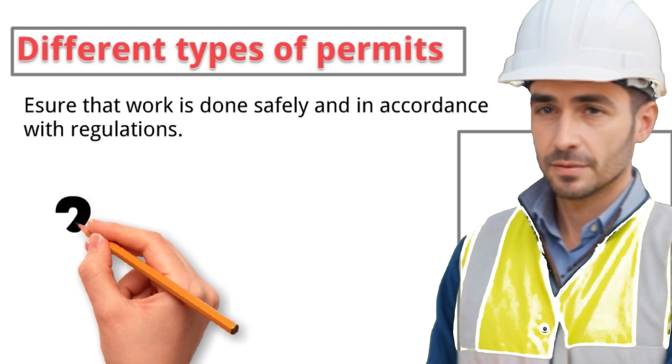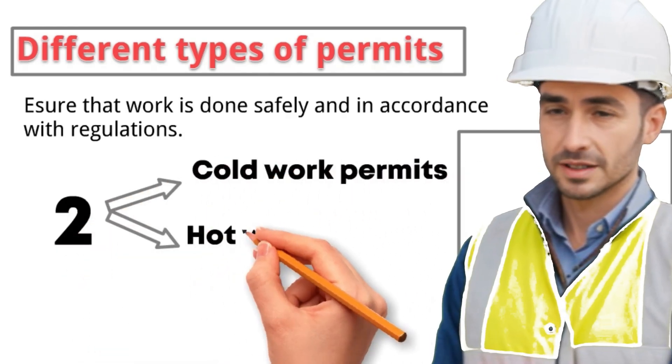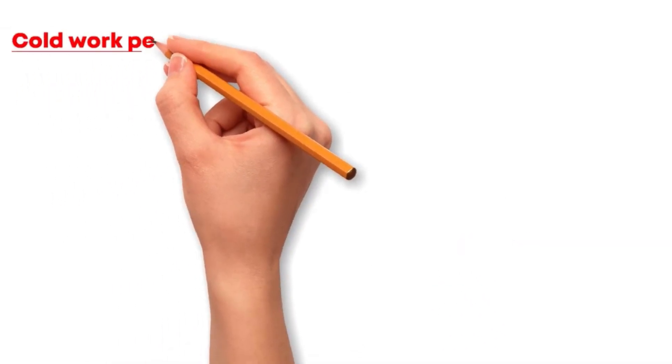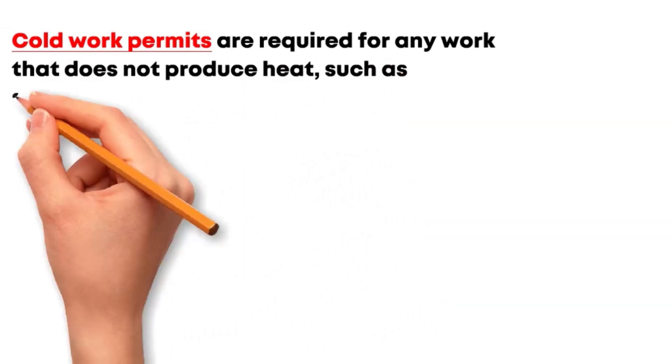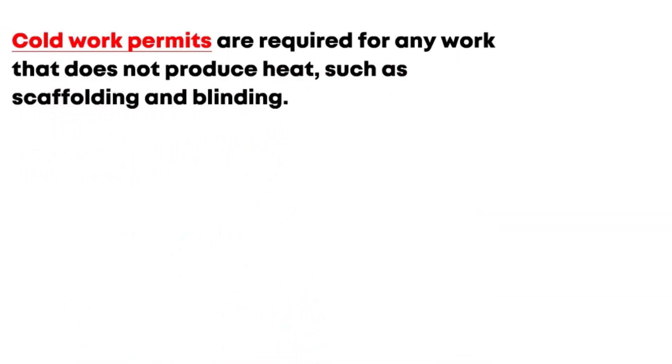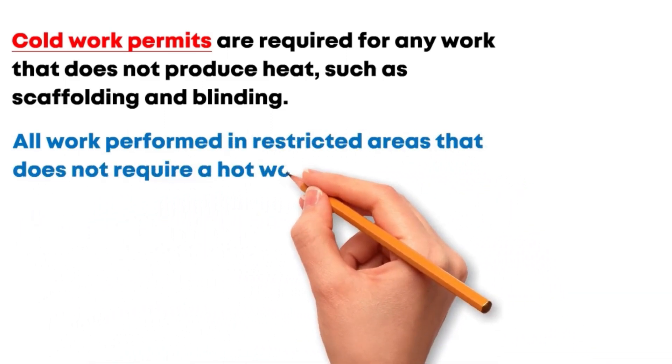There are two main types of permits in engineering: cold work permits and hot work permits. Cold work permits are required for any work that does not produce heat, such as scaffolding and blinding. Cold work permits are also required for all work performed in restricted areas that does not require a hot work permit.